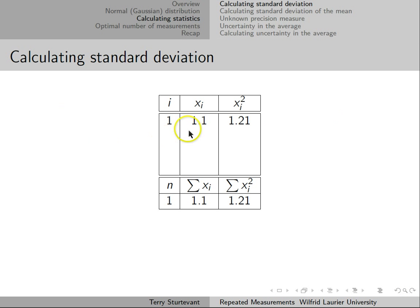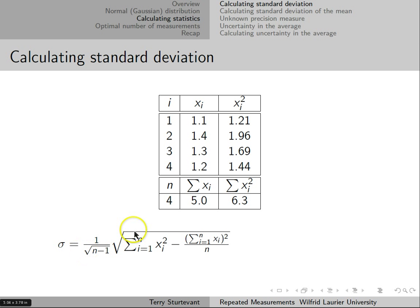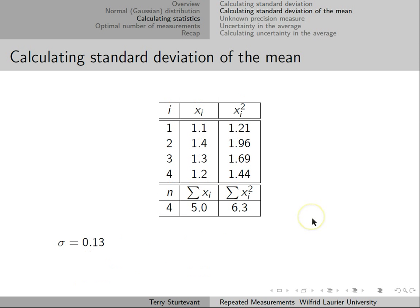Here we show how you calculate it. Our first measurement has a value of 1.1. We add a column for the square of each value, and square each measurement as we go. At the bottom, we sum the x measurements, the squares of the x values, and n is the number of points — in this case 4. The standard deviation for this data is about 0.13. The standard deviation of the mean is the standard deviation divided by the square root of n, so it's 0.064.